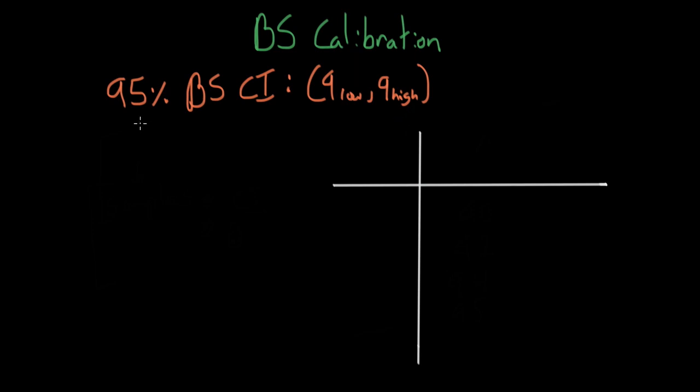The problem is, as we discussed last time, there is some error in this bootstrap confidence interval. So what we said was a 95% confidence interval may not actually be 95% confident. It instead may only be 90% confident.